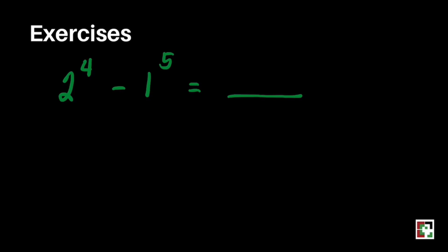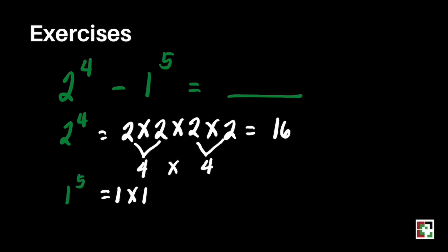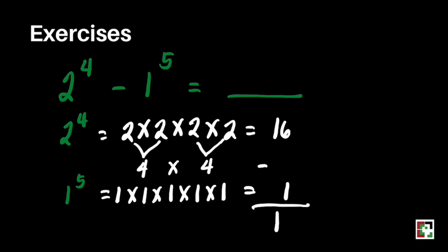We have the last one: 2 to the 4th power minus 1 to the 5th power. The value of 2 to the 4th power is 2 times 2 times 2 times 2: 2 times 2 is 4, and 4 times 4 is 16. And 1 to the 5th power is 1 times 1 times 1 times 1 times 1, which equals 1. So 16 minus 1 is equal to 15. And we're done.